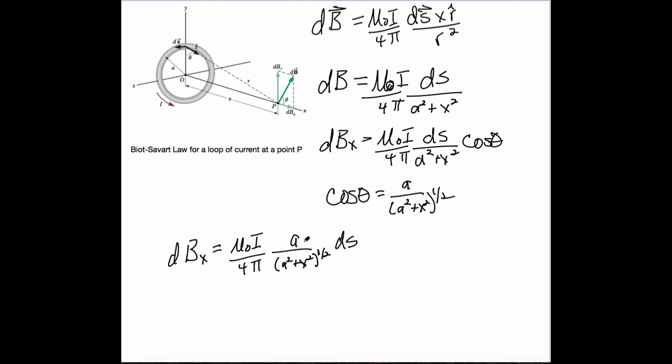So now look, constant, constant. These are obviously constants. A, X are all constant, or both constants. So to do this integral, it's now the B field in the X direction from the entire ring is going to be, look at all the stuff I can take out of the integral.